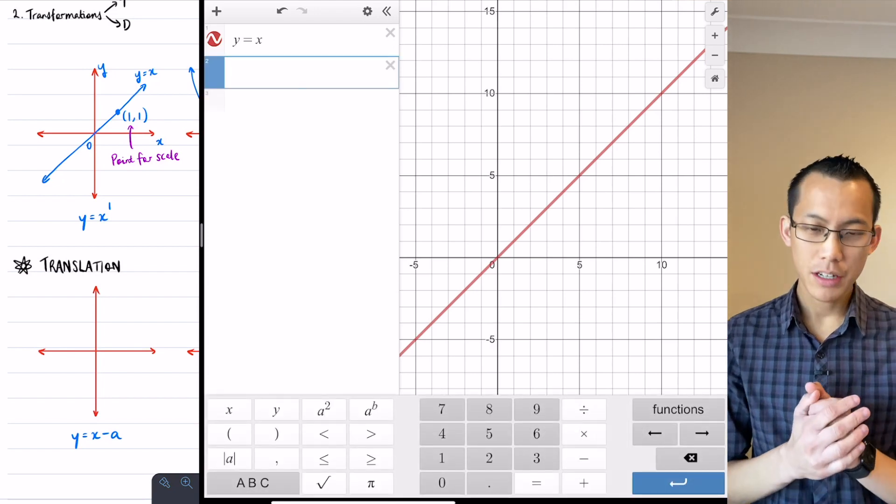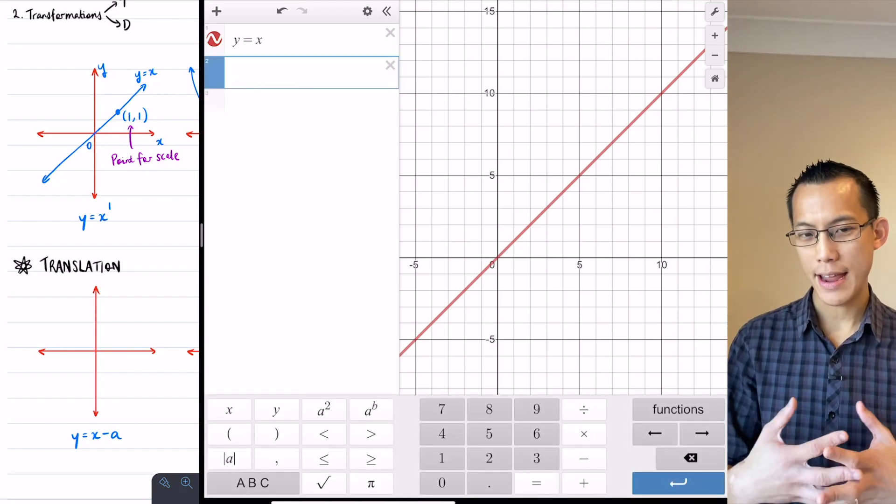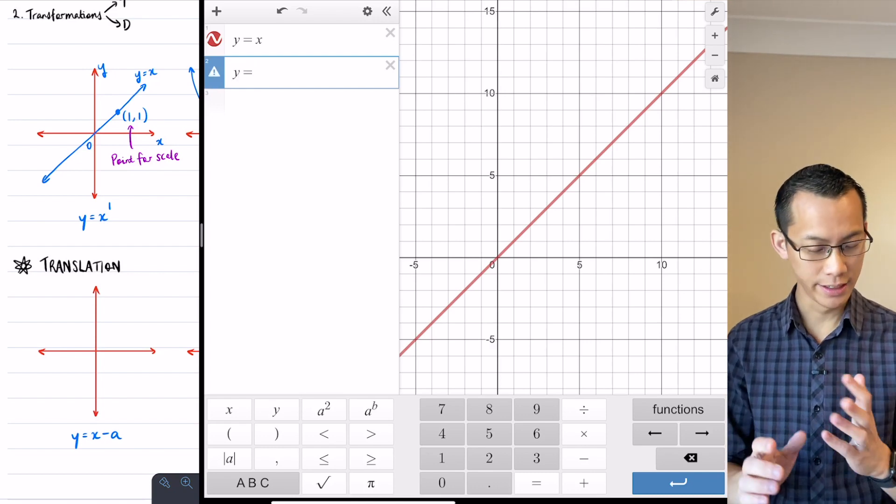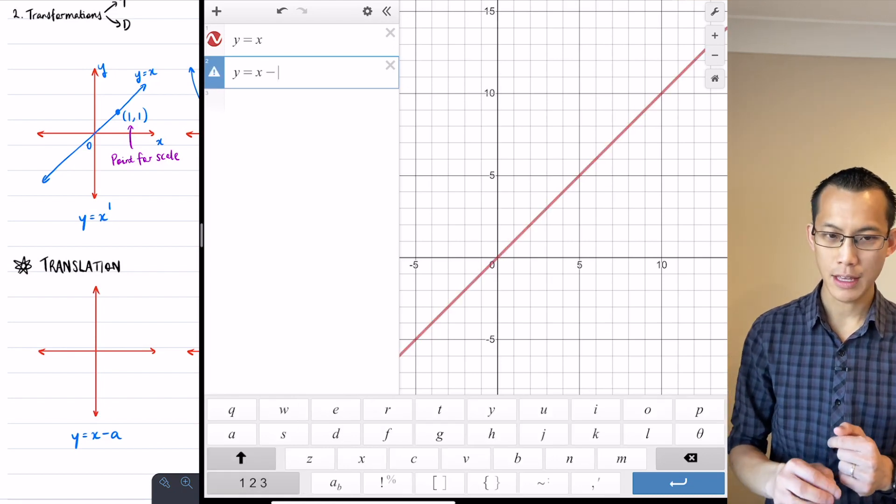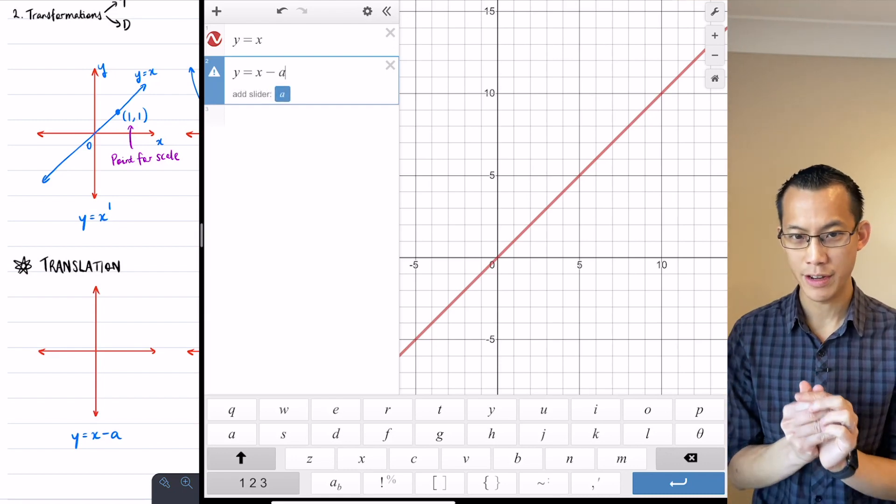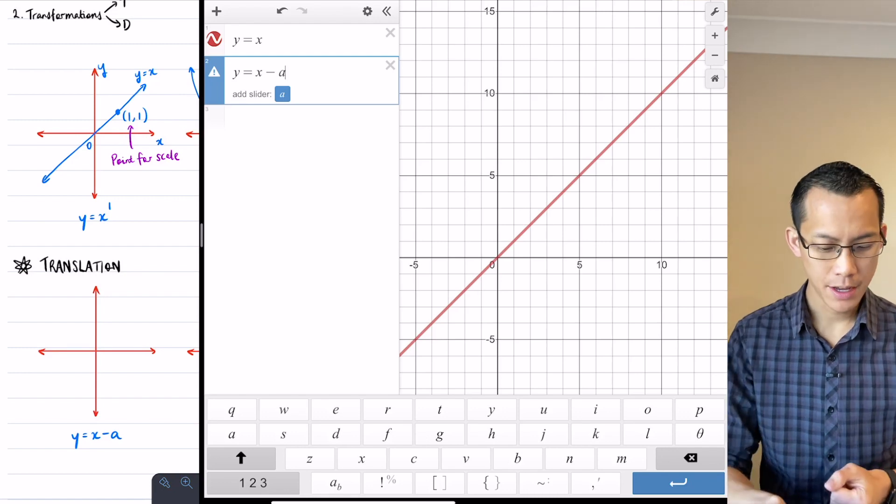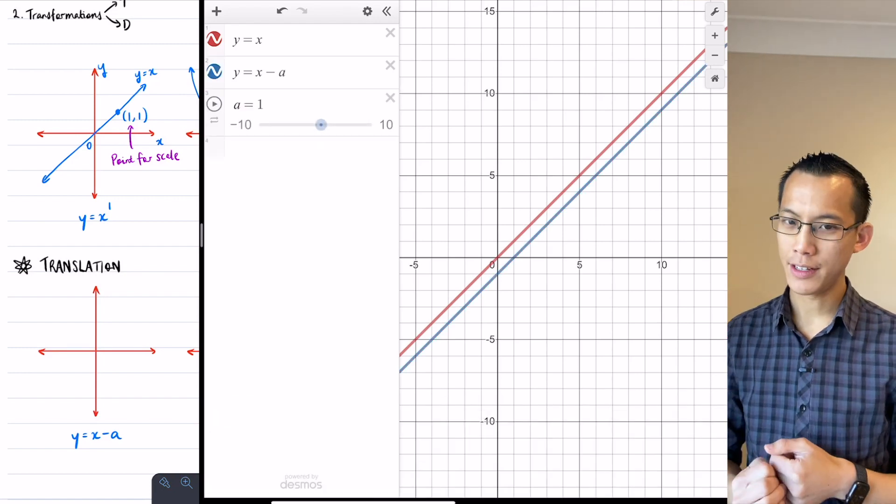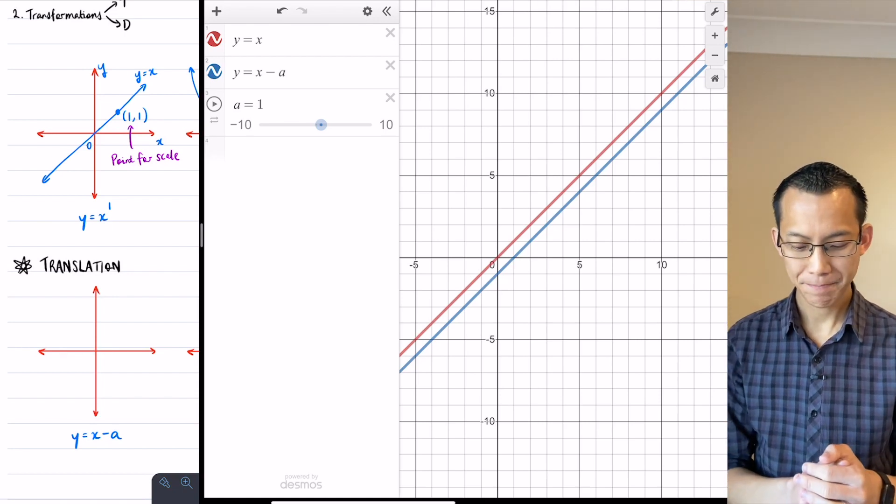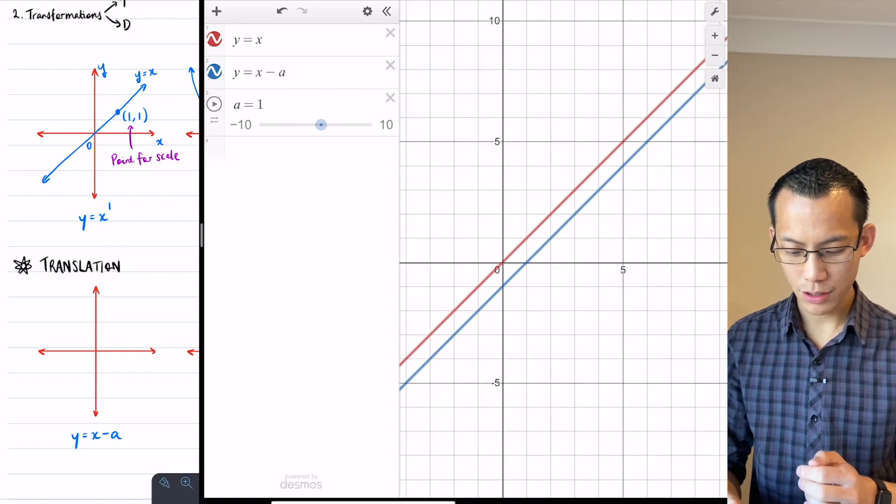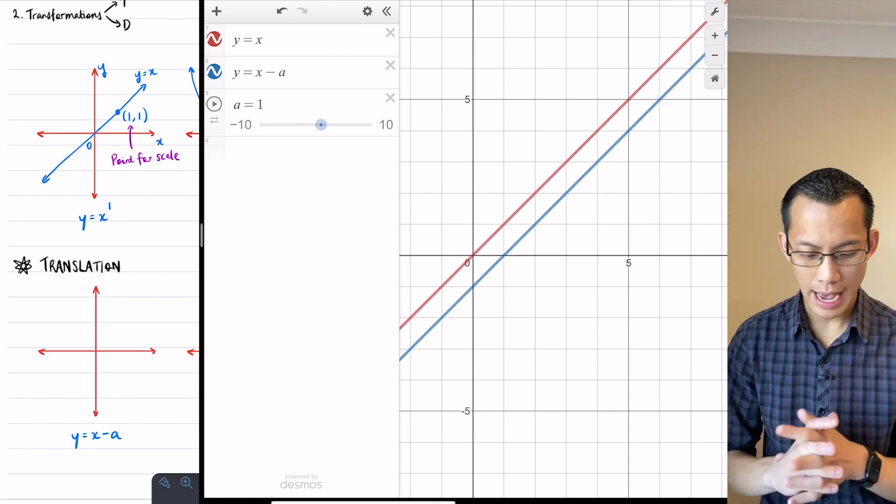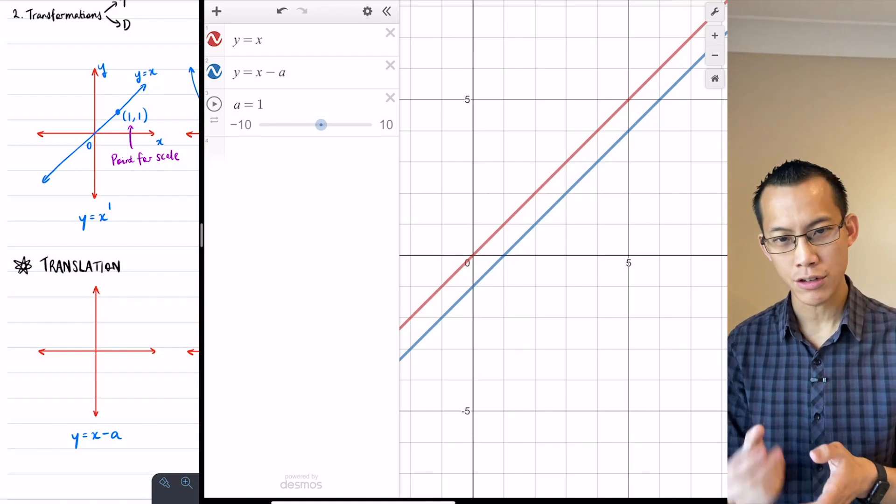So there's our first graph. And now what I want to do is explore what happens if we take away a constant, a, from the right-hand side of the equation. If you've never encountered it before, if you go into the alphabetical keyboard in Desmos and put in a, then on the left-hand side of my Desmos screen you can see it's prompting me to add a slider so I can change the value of a dynamically.